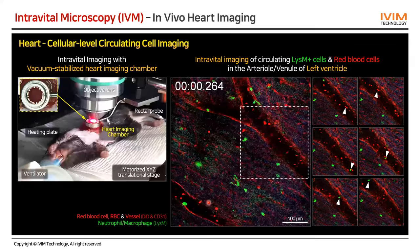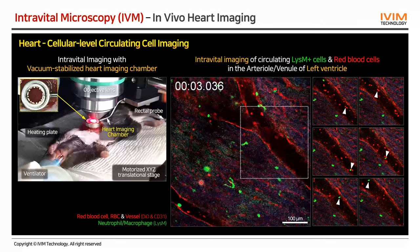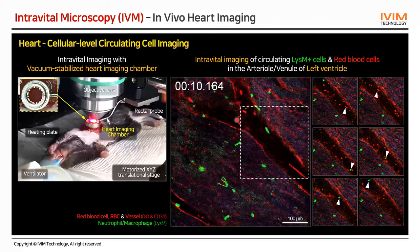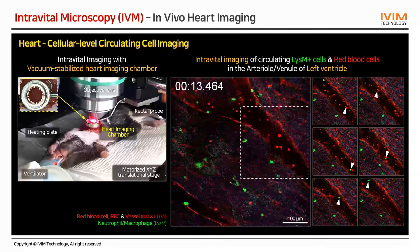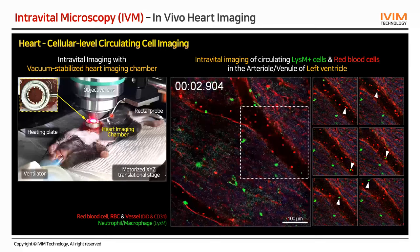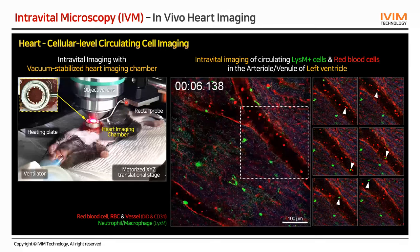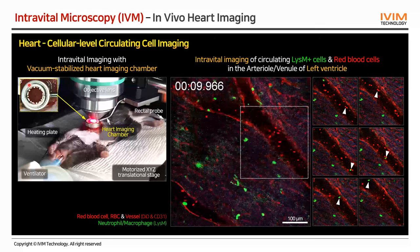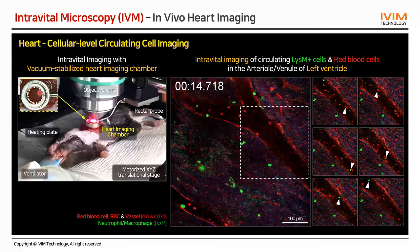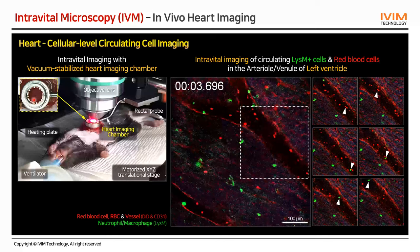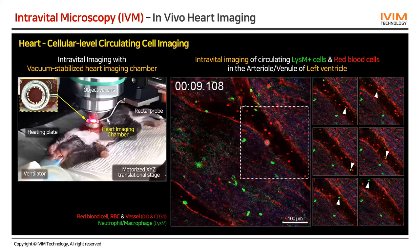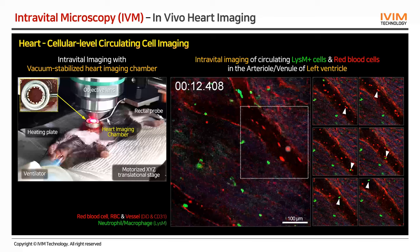This is another example using our heart imaging accessory. Using the same negative pressure principle, we stabilize just a portion of the beating heart during imaging, while all other parts of the heart beat freely — keeping the mouse alive. At 30 frames per second, we can see individual red blood cells flowing through the heart vessels.